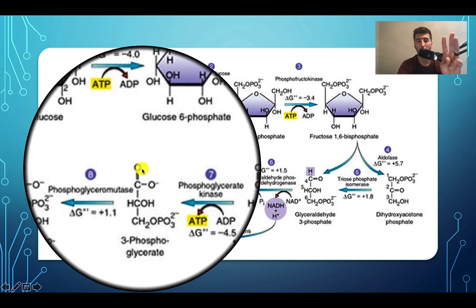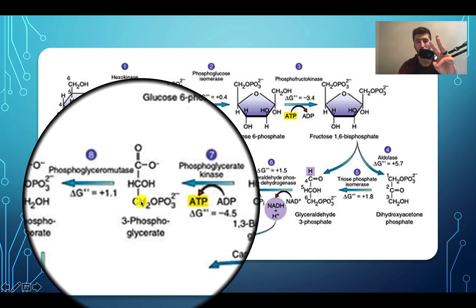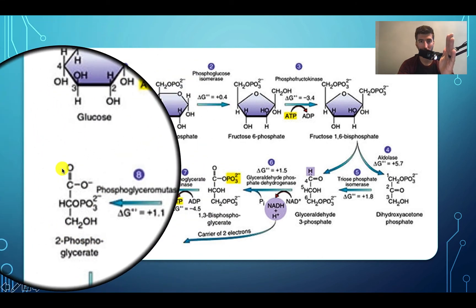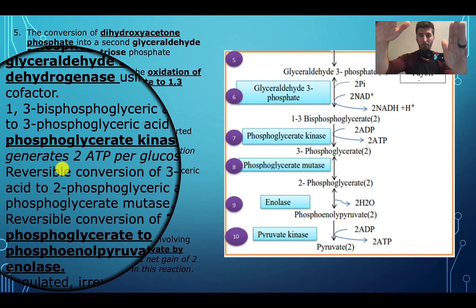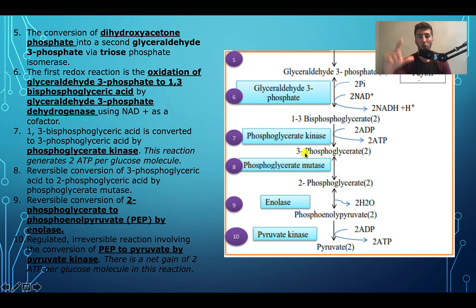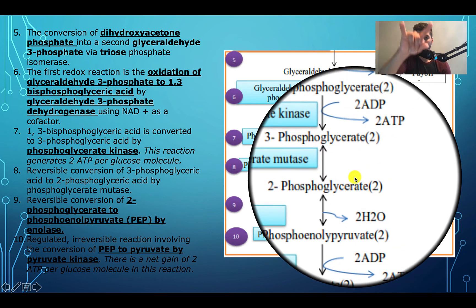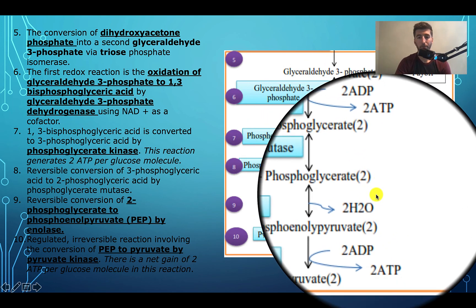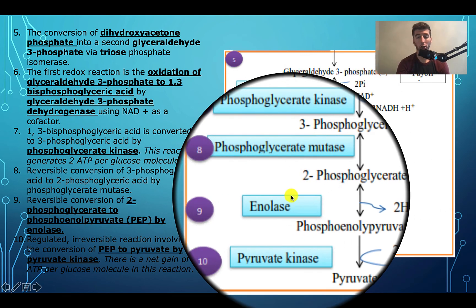Next, phosphoglycero mutase shifts the phosphate from the third carbon to the second carbon, producing 2-phosphoglycerate. It may be helpful to visualize this as two separate strings, since we actually have two 2-phosphoglycerates running in tandem. Then enolase pulls a water molecule off, creating phosphoenolpyruvate, or PEP for short.